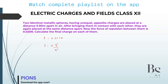So what is F? 0.025. K is 9 × 10⁹. Q is what we are looking for, and R squared is 0.90 × 0.90 whole divided by 9 × 10⁹.